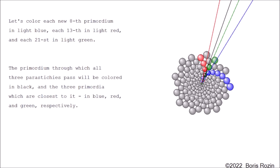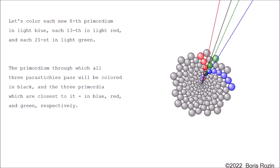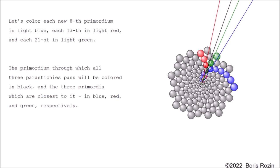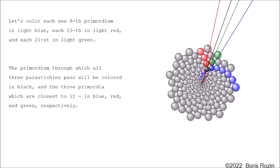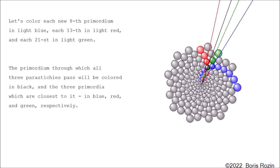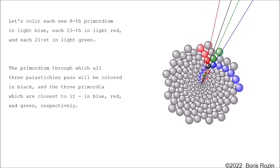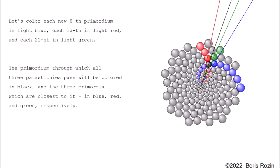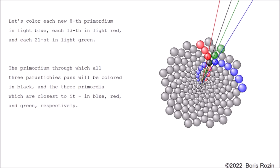Let's color each new eighth primordium in light blue, each thirteenth in light red, and each twenty-first in light green. The primordium through which all three parastichies pass will be colored in black, and the three primordia which are closest to it in blue, red, and green, respectively.